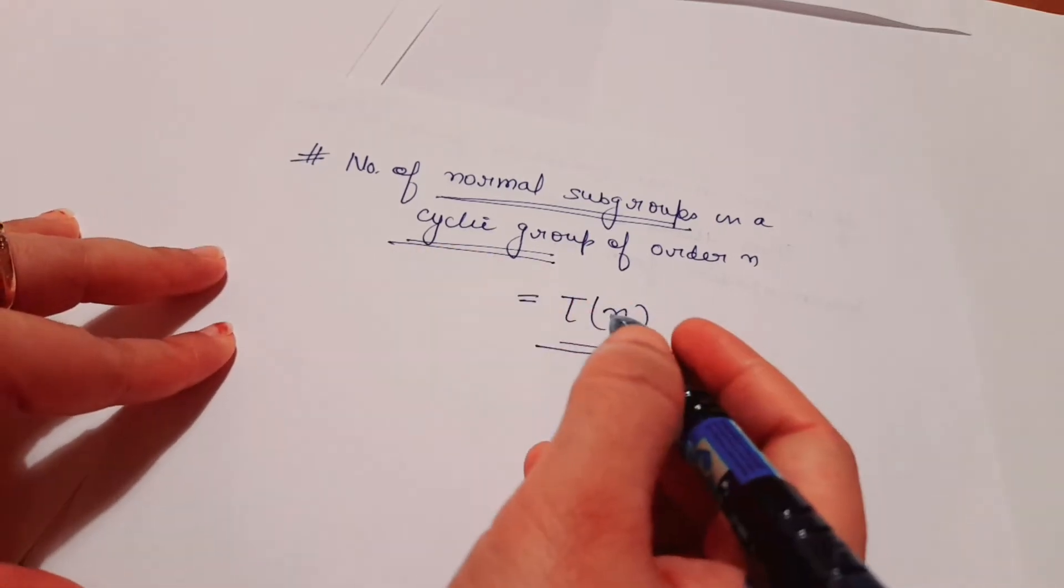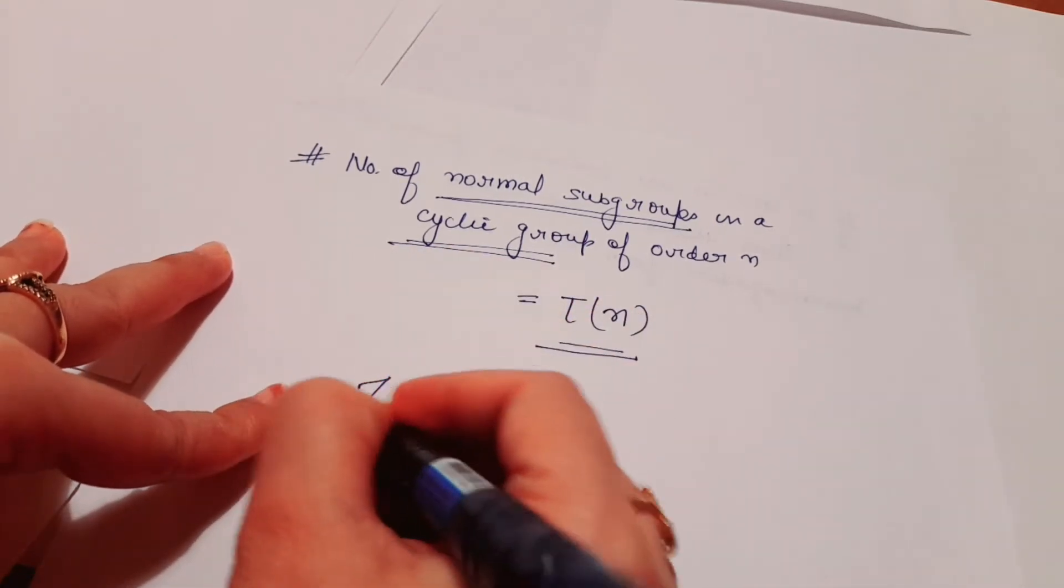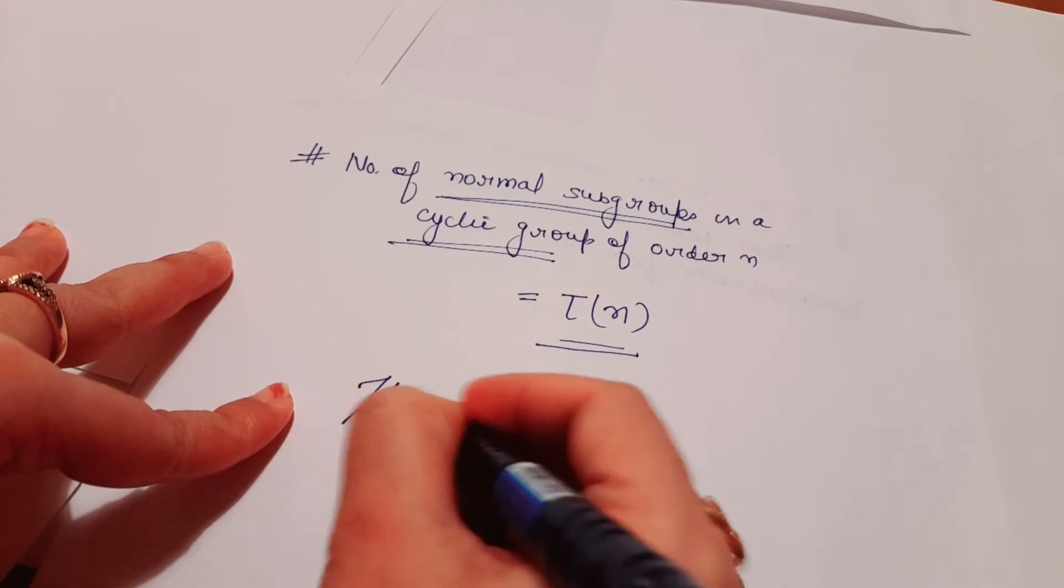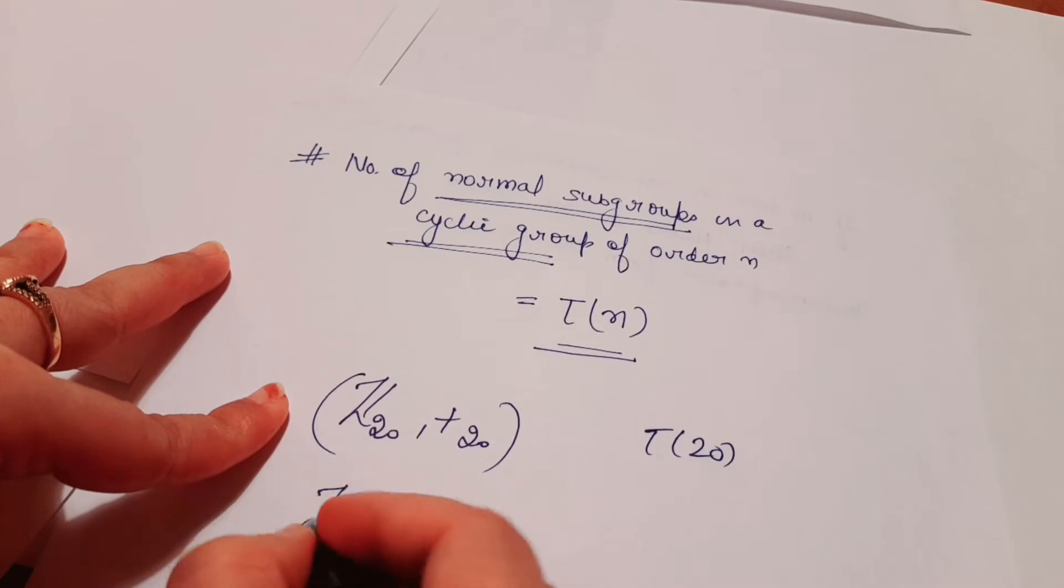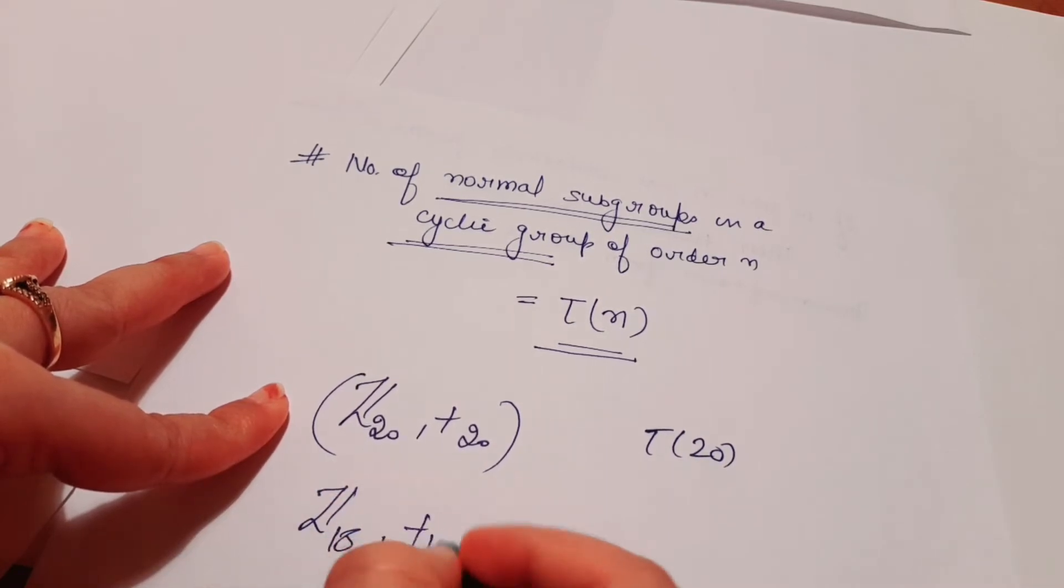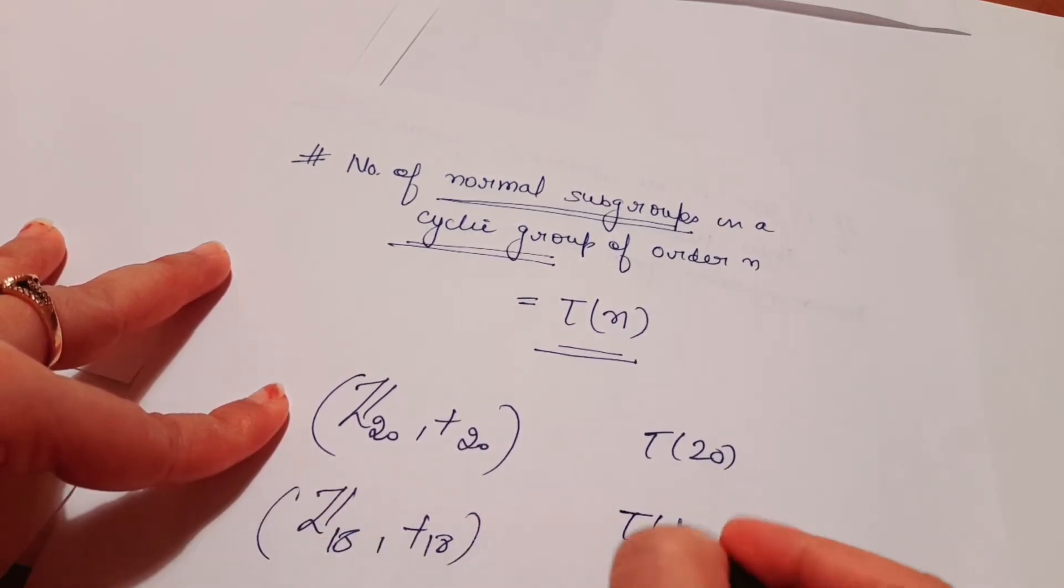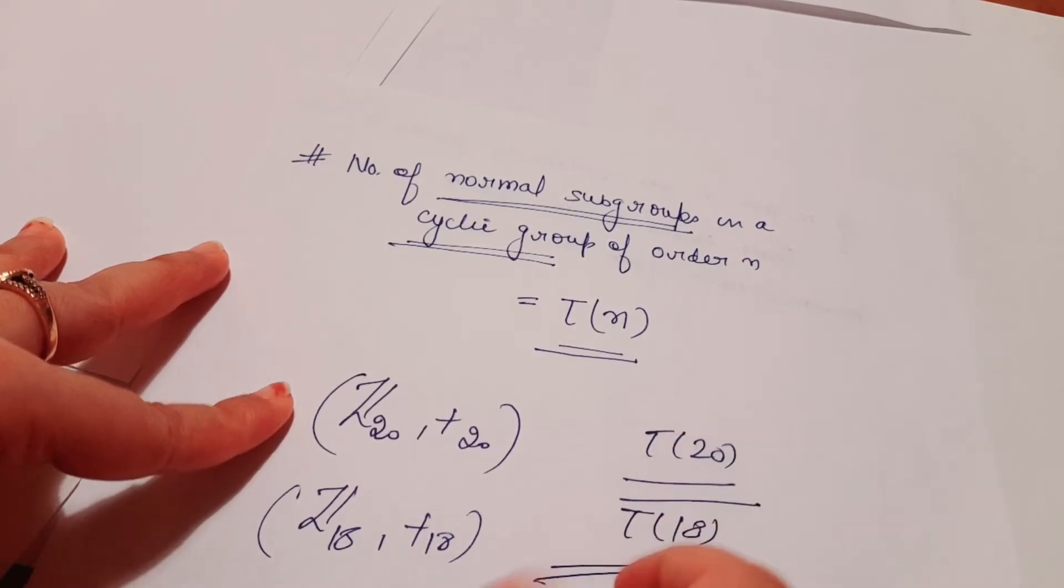If you're calculating the number of normal subgroups, whether you have Z of 20 plus 20, then the number of normal subgroups is tau 20. You have Z of 18 plus 18, the number of normal subgroups is tau 18. Like this.